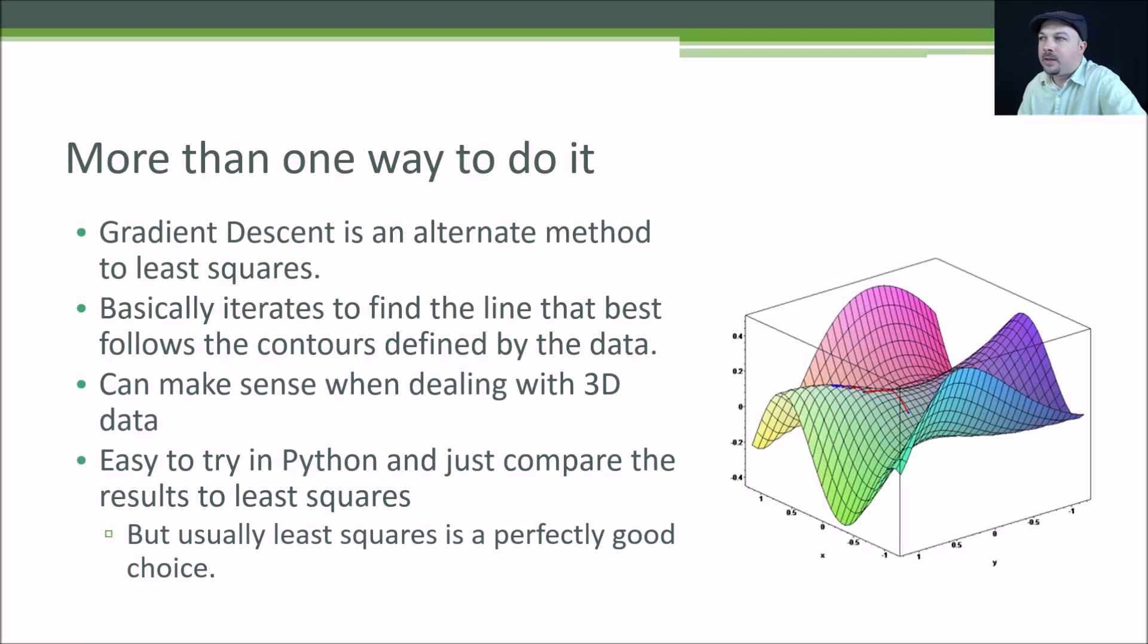How do I know how good my regression is? How well does my line fit my data? That's where R squared comes in. R squared is also known as the coefficient of determination. It is the fraction of the total variation in Y that is captured by your model. How well does your line follow that variation? Are we getting an equal amount of variance on either side of your line or not? That's what R squared is measuring.